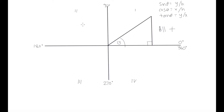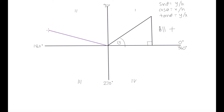Now let's take a look at quadrant 2. In quadrant 2, we have positive y values since we're still above the x-axis, but our x values are negative because we're on the left side of the Cartesian plane. So y is positive and x is negative in quadrant 2. Let's draw another right-angle triangle — drawing a line from the origin to a coordinate in quadrant 2, then bringing that line down to the x-axis to form our right-angle triangle.